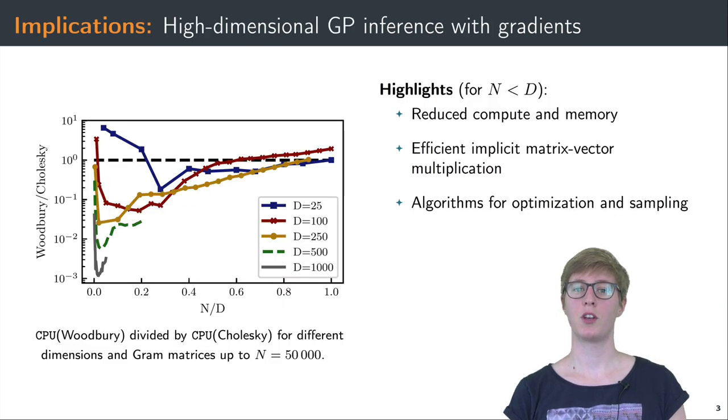The proposed decomposition is useful when the number of observations is smaller than the dimensionality. You can see this in the figure where lines that lie below the horizontal black dashed line indicate that the decomposition is faster. For d much larger than n, it can lead to significant speed up.